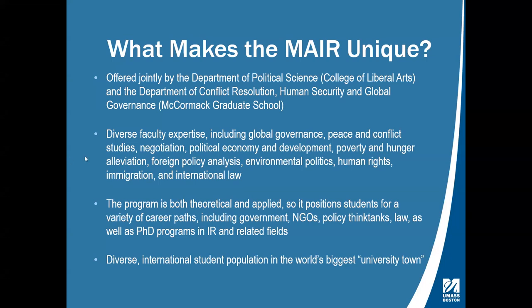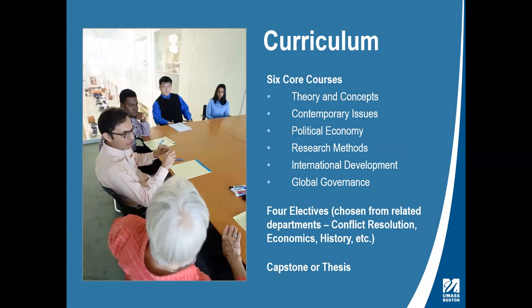The curriculum has both core classes and elective classes. The six core classes cover theory and concepts in international relations, contemporary issues in international politics, international political economy, research methods, international development, and global governance. In addition to those six core courses, you choose four elective classes to round out your degree. You might take electives from the conflict resolution or political science programs, or from economics, history, or other departments depending on your interests.